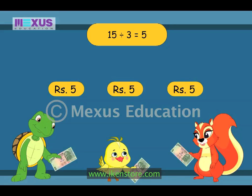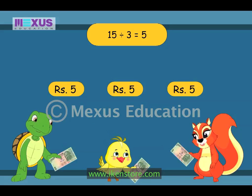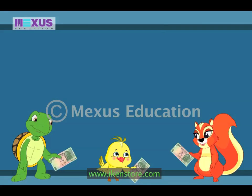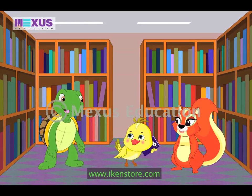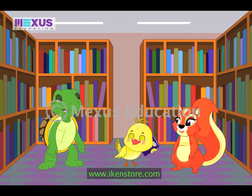This means that 15 divided by 3 is equal to 5. So, if we share rupees 15 equally, we need to pay rupees 5 each. I have rupees 5 now, so we can buy this book. Very good. I have rupees 5 too, so we all can share equally.